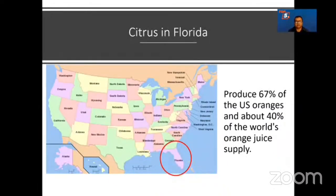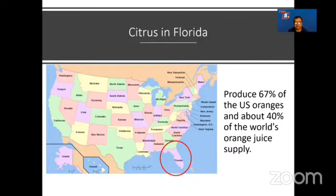Citrus in Florida is a big deal. Florida is a small state, however it produces 67 percent of the US oranges and about 40 percent of the world's orange juice supply. The problem we are trying to solve is Huanglongbing, also known as citrus greening disease — a bacterial plant disease that is fatal to citrus trees. It is caused by the gram-negative bacterium Candidatus Liberibacter Asiaticus and is transmitted by the Asian citrus psyllid. Diseased trees produce bitter, hard, misshapen fruit and die within a few years of being infected.